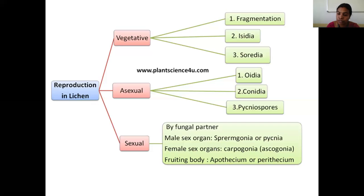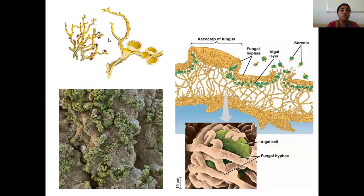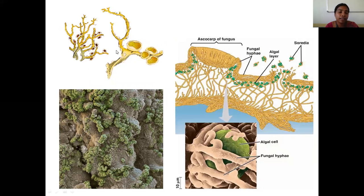In asexual reproduction, the first mode is fragmentation. From the lichen thallus, if it accidentally breaks, each fragment — when it falls on a suitable substrate — can grow into a new lichen thallus. This is one mode of vegetative reproduction.